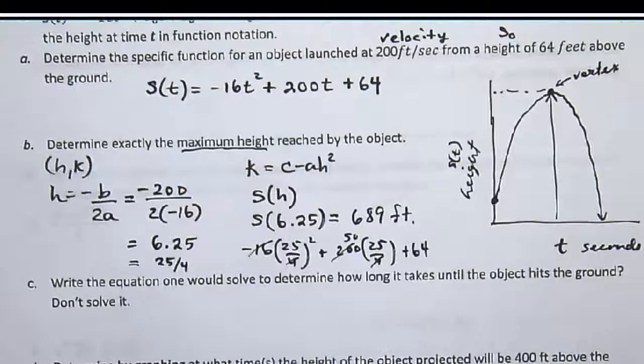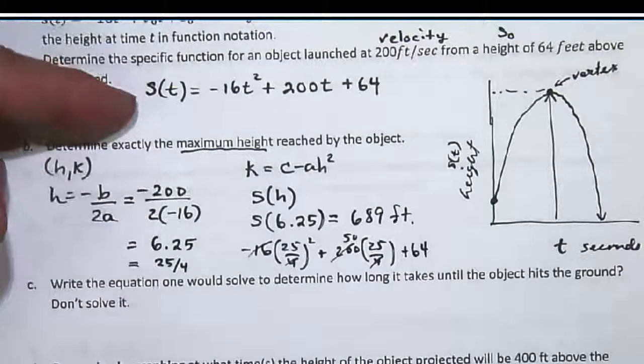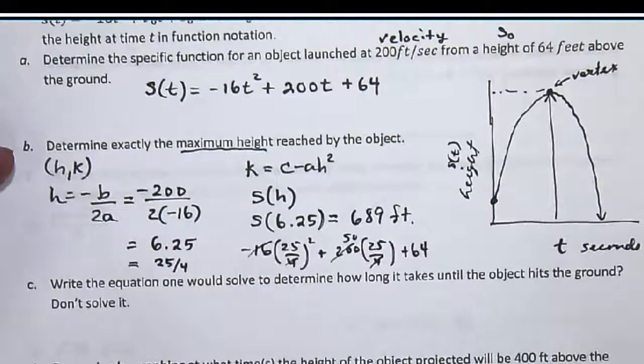You would just evaluate that with the decimals and that wouldn't be so bad. So anytime they ask you for a maximum or a minimum and the equation is parabolic, you're looking for the vertex.